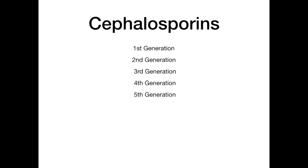All of that high-yield clinical information aside, the reason this is so difficult to learn is that you have five different generations, but all of these drugs start with 'ceph.' So separating them into first through fifth generation is really challenging. The focus of this video is to show you a really cool, simple, efficient, high-yield mnemonic for knowing which cephalosporin falls into which category. By the end of this video, you'll be an expert.